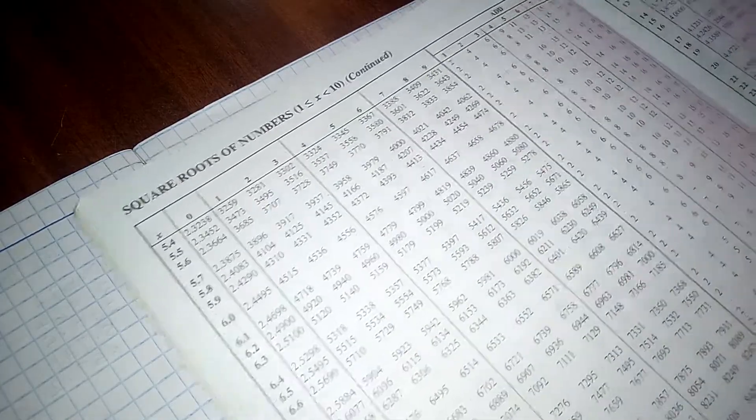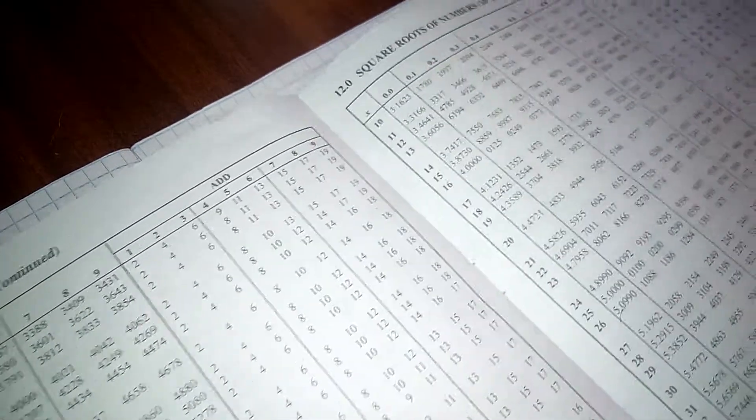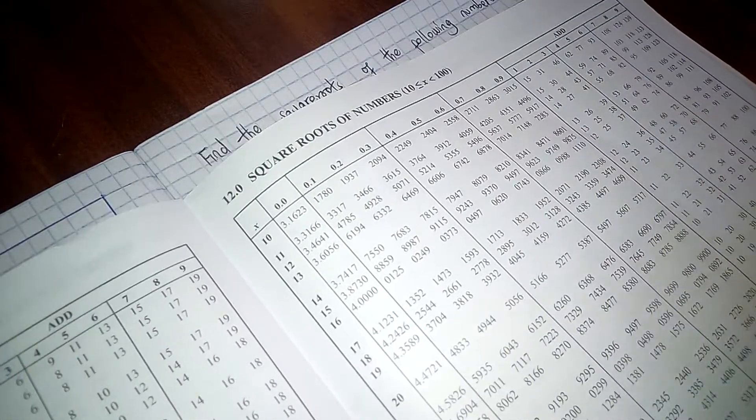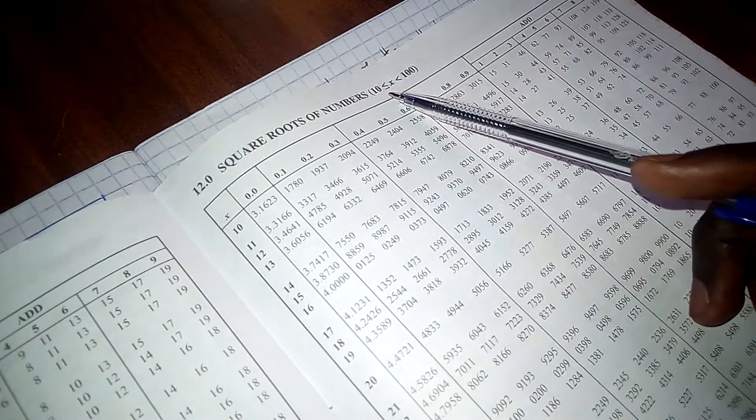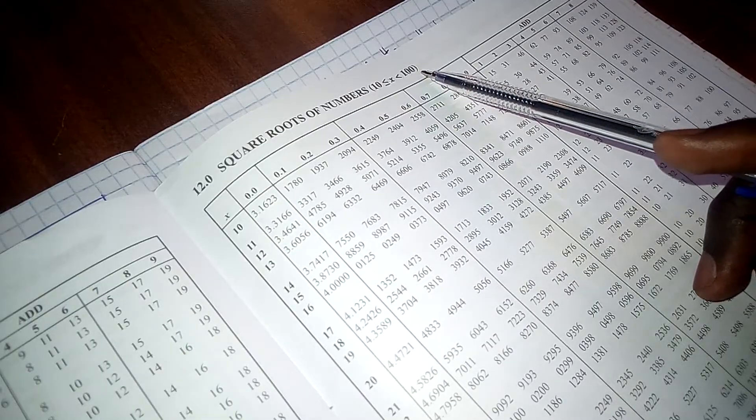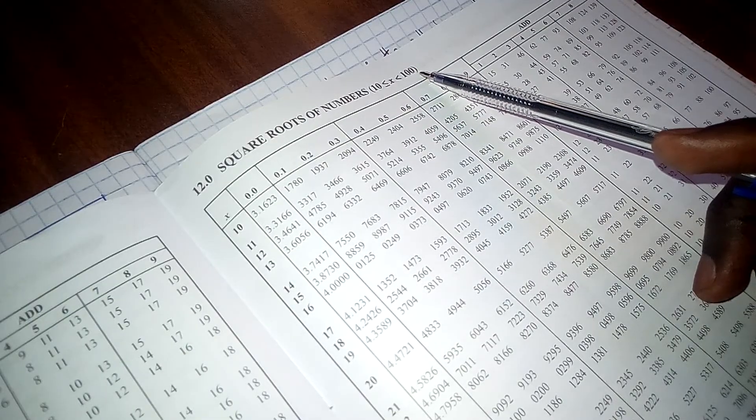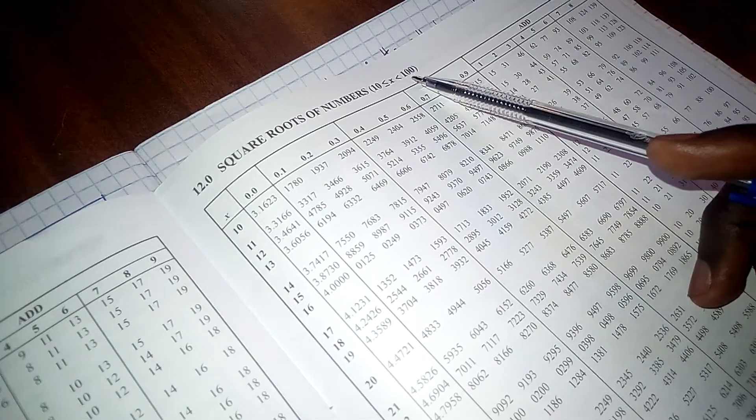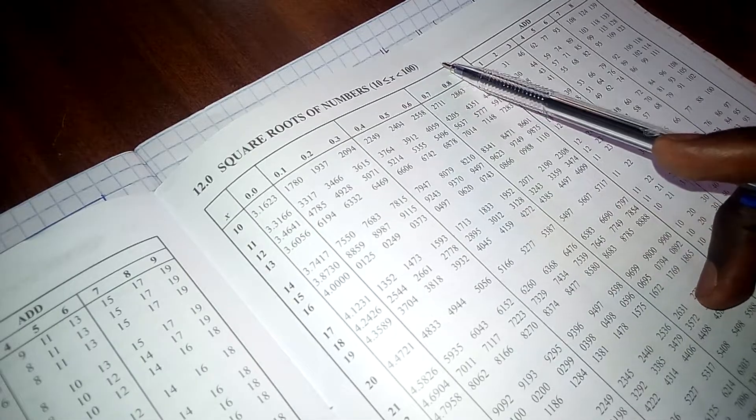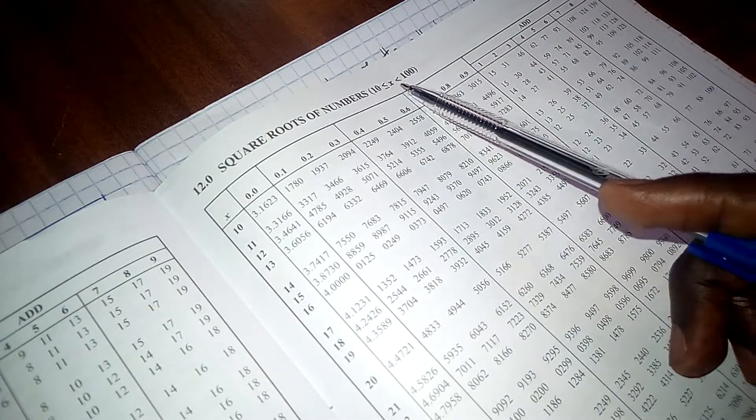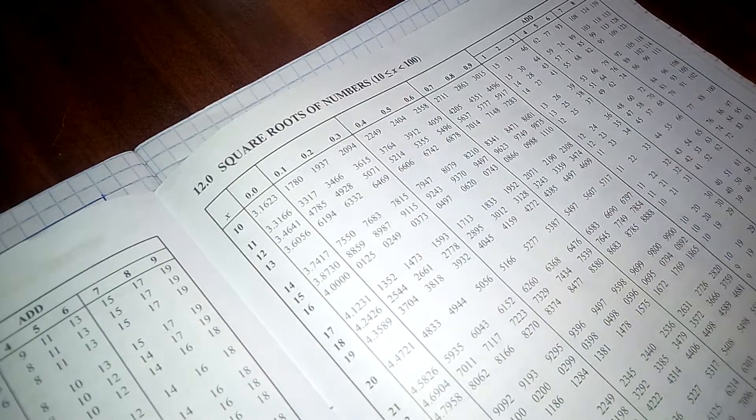And then again we are going to notice that we can get the square roots of numbers which lie between 10 and 99.99. So that is again slightly less than 100. So those are numbers that are lying in this range we can also get.